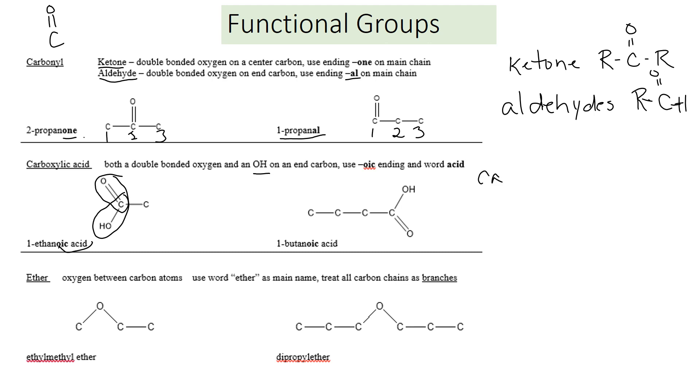Carboxylic acid has an R, and then it has a C with a double bonded O and then an OH. Here's the next one, butanoic acid. You see one, two, three, four carbons. That's where the butane part. Oic acid because you've got the double bonded O and the OH.